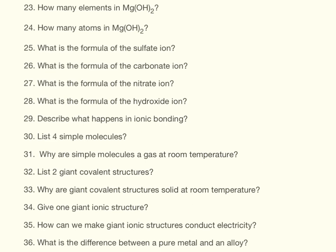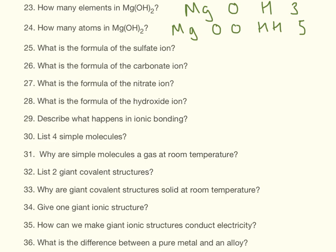How many elements in magnesium hydroxide? We have magnesium, oxygen, and hydrogen — three again. How many atoms in magnesium hydroxide? We have one magnesium, two oxygens, two hydrogens, so that is five.